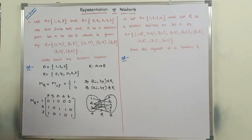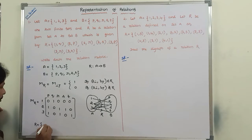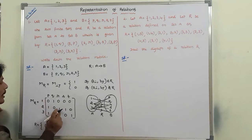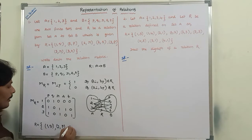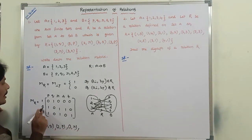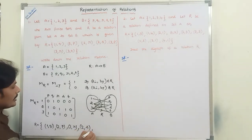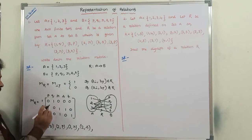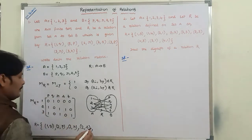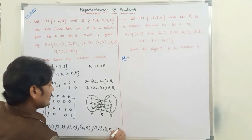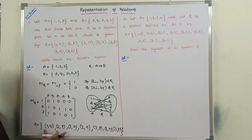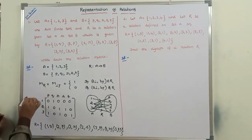From the relation matrix, we can write the ordered pairs. R is equal to: 1 is related with Q; 2 is related with P, R, and S; 3 is related with P, R, and T. This is the answer for the first problem.